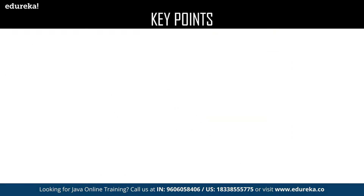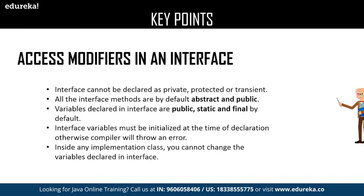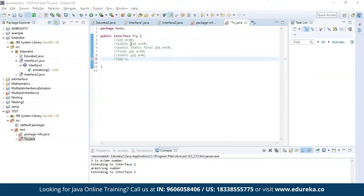Let us continue with our key points. The next one is access modifiers in an interface: an interface can be declared as private, protected, and transient. All interface methods are by default abstract and public. Variables declared in an interface are public, static, and final by default. Interface variables must be initialized at the time of declaration. Here I have defined an interface 'try'. I'm declaring an integer variable a using int a = 10, which is valid. You can also use the public access modifier, or declare it as public static final — all of the above are equivalent.